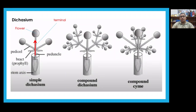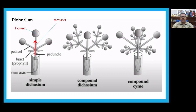Let's look at some basic types. It's not necessary to memorize all these terms — I'd like you to understand the basic branching structure. In one simple branching case, we have a terminal flower, and new flowers develop in the axil of the leaves.